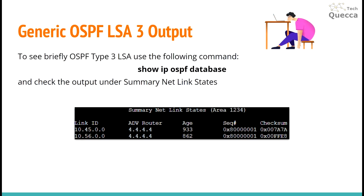To briefly view OSPF Type 3 LSAs, use the following command: show ip ospf database, and check the output under Summary Net Link States. Here we can see area 1234, a Link ID for networks which are outside of area 1234, area 0, and area 56, the advertising router, age, sequence number, and checksum.